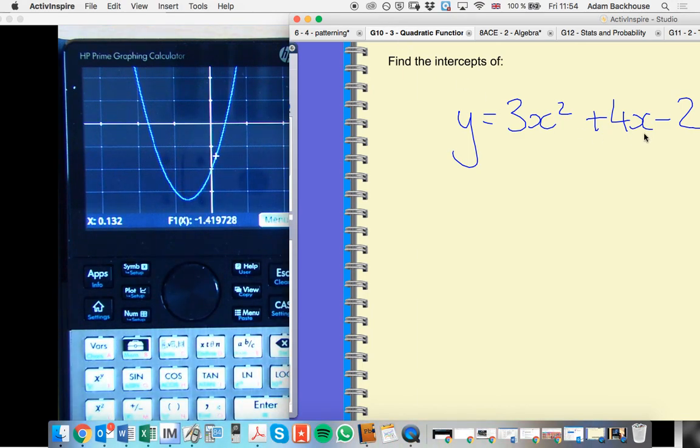For those of you that are confident with your quadratic functions, we should be able to see that the constant term is negative 2, which actually tells us our y-intercept. We will look at how to do that on the calculator in case you're not so confident with that.